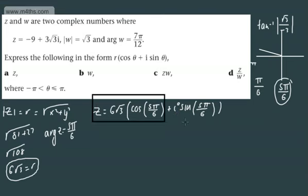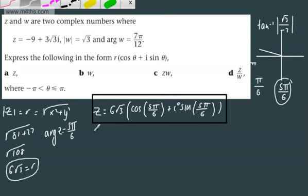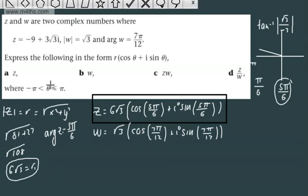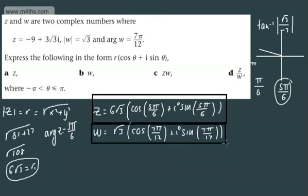Now, we're told that the modulus of w is √3. So we can now express this. Remember that this mod w is the r value. So if we're calling this one r₁, we will say that r₂ is √3. And then we've got the argument, which we could call θ₂, as the other one was θ₁. We're going to have √3(cos 7π/12 + i sin 7π/12). And they are both now in polar form or modulus argument form. So we've done the first two bits of the question.